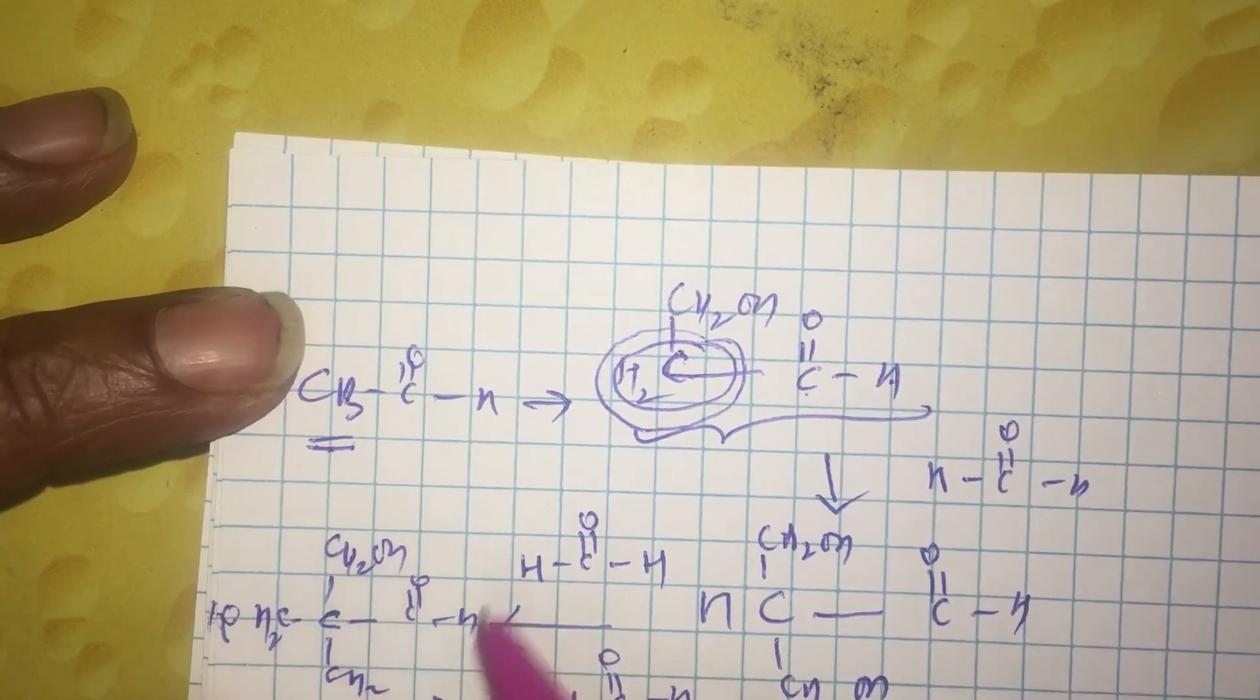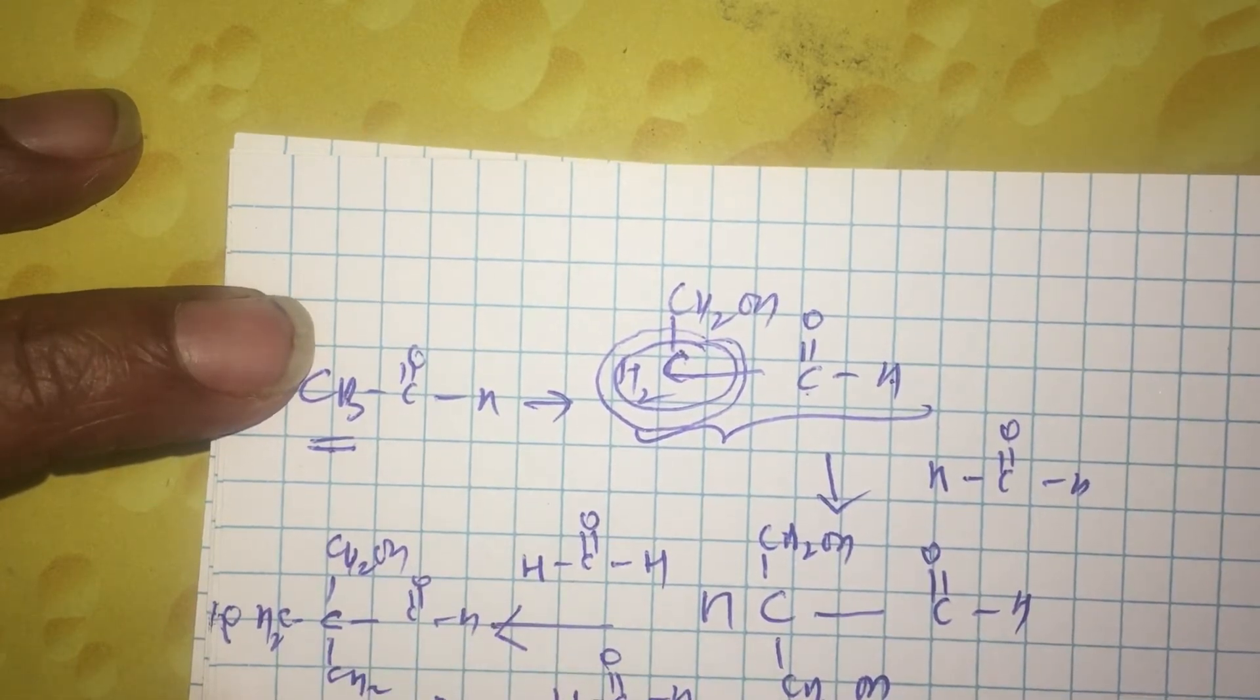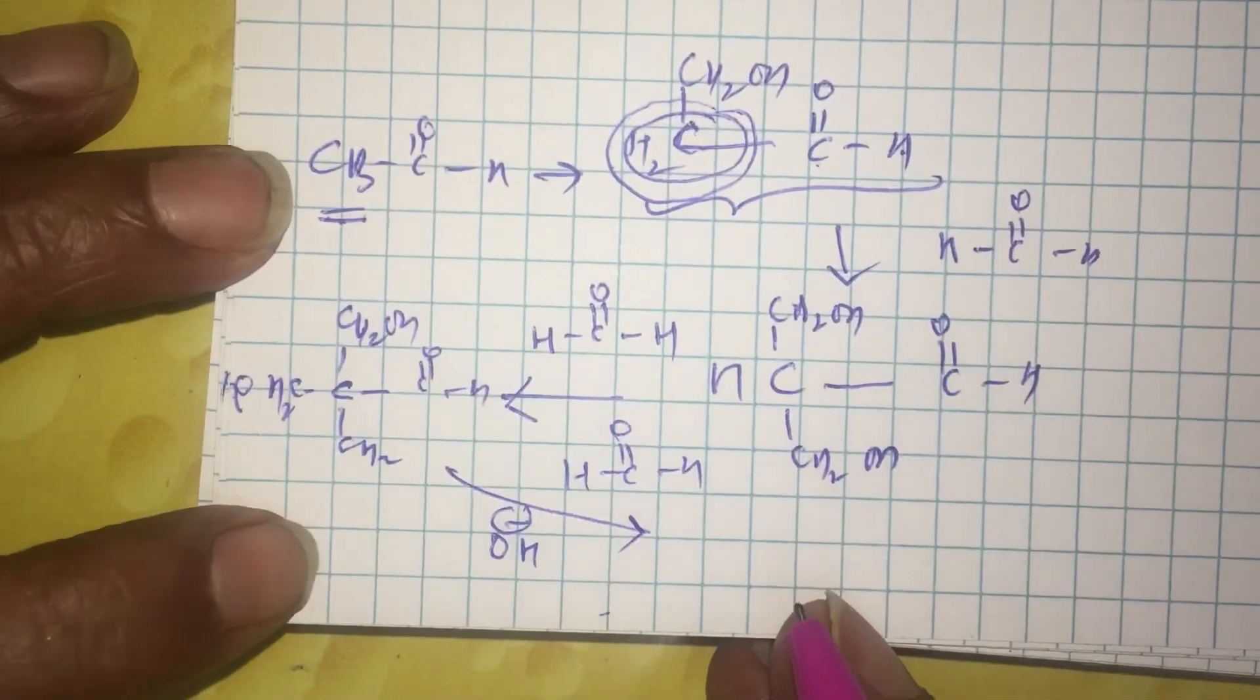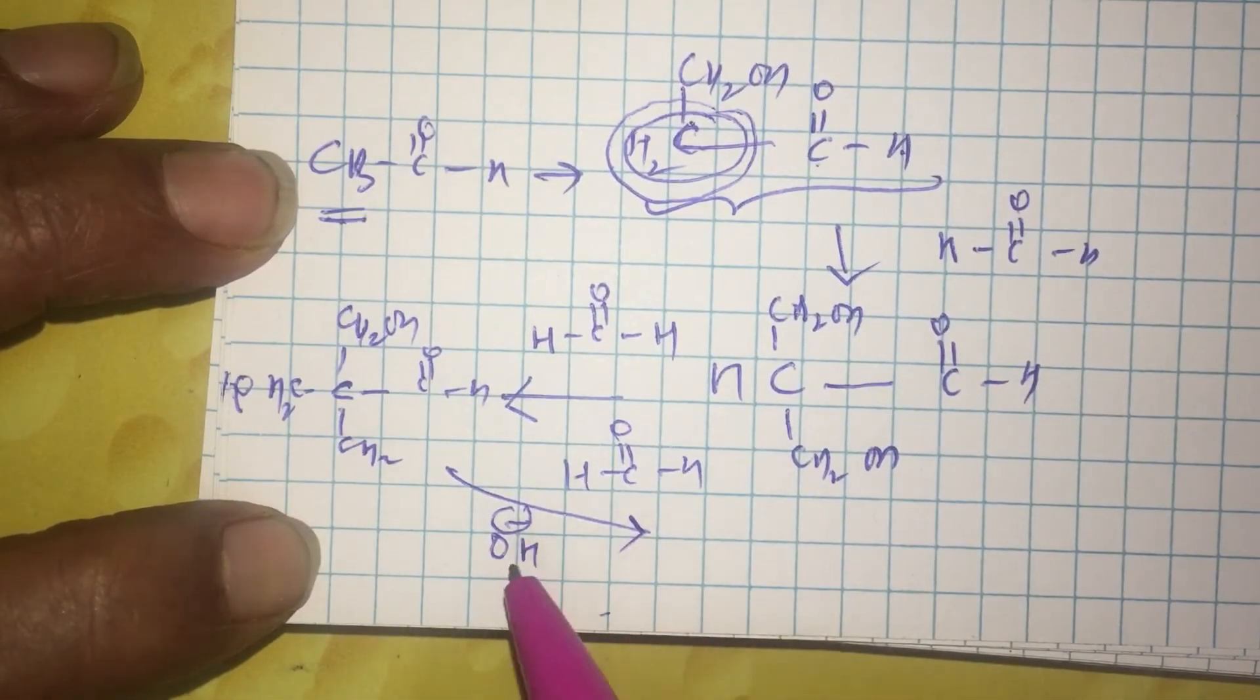This product is again reacting with formaldehyde in basic medium. So, though it has no alpha hydrogens, the reaction continues and this type of reaction is known as Cannizzaro reaction.